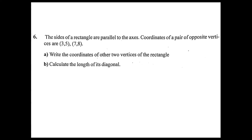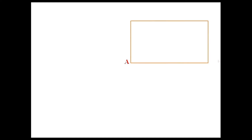Sixth problem: the sides of a rectangle are parallel to the axes. Coordinates of a pair of opposite vertices are (3, 5) and (7, 8). Write the coordinates of the other two vertices of the rectangle and calculate the length of its diagonal. Let the rectangle be ABCD with opposite vertices A(3, 5) and C(7, 8). On a line parallel to the y-axis, x-coordinates are the same, so the x-coordinate of B is 7. On a line parallel to the x-axis, y-coordinates are the same, so the y-coordinate of B is 5. So the coordinates of B are (7, 5). Similarly, the coordinates of D are (3, 8).